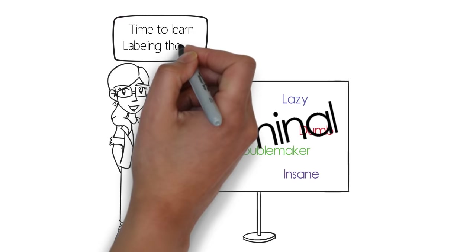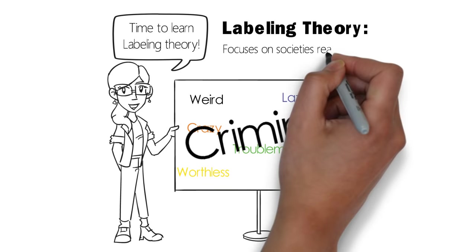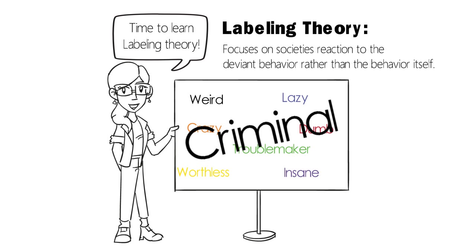Stemming from symbolic interactionism, labeling theory focuses not on the deviant or criminal behavior itself, but on society's reaction to the deviant behavior. How we respond to the behavior determines whether something or someone is deviant.